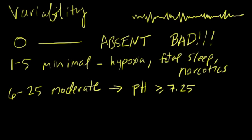So if you're having good variability, moderate variability, normal variability—you'll hear all those terms used—you can be reasonably assured that the pH is greater than or equal to 7.25.